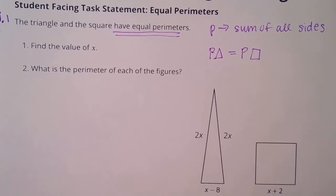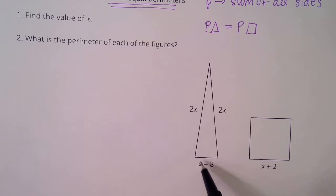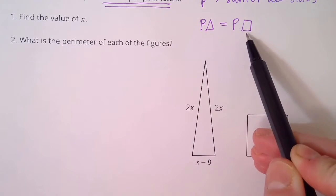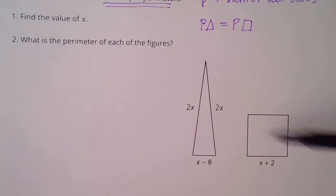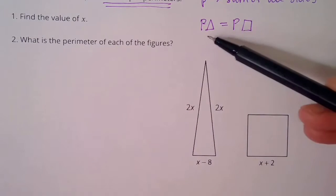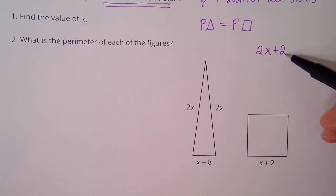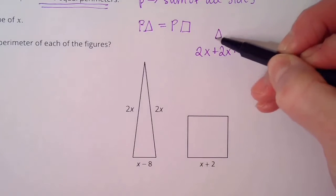So if the perimeter is adding all four sides, or all three sides, take a minute and write an expression for what the perimeter of the triangle would look like, and what the perimeter of the square would look like. If the sides are added up, we get 2x plus 2x plus x minus 8. That's the perimeter of the triangle.